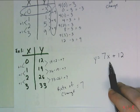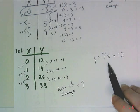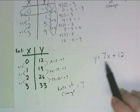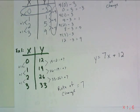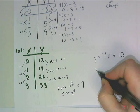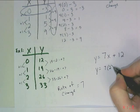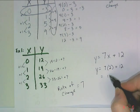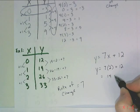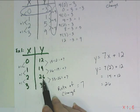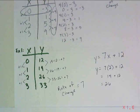We can check that by filling in one of the x values. Taking x equals 2: 7 times 2 plus 12 is 14 plus 12, which is 26. And where x is 2, y is indeed 26 in the table. So that checks out — my equation is correct.